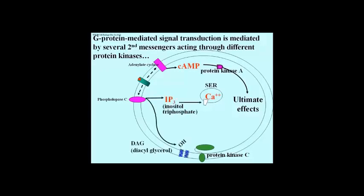Now let's look at what happens when the signal binds to the receptor and activates a membrane protein called phospholipase C. This generates two intracellular second messenger molecules: one is inositol phosphate 3, or IP3, shown here in the cytoplasm, and the other is diacylglycerol, or DAG for short, which is actually embedded in the plasma membrane.